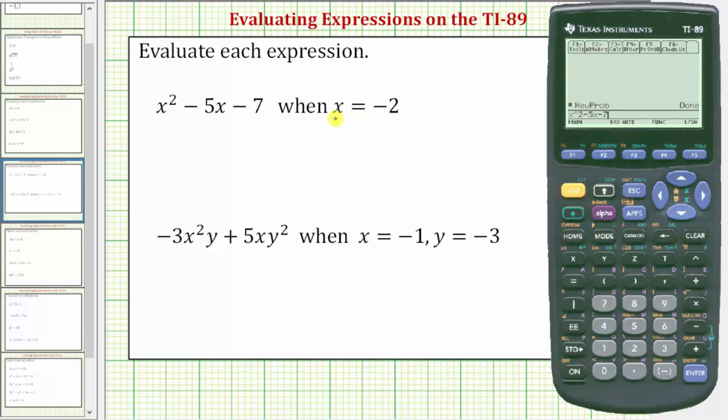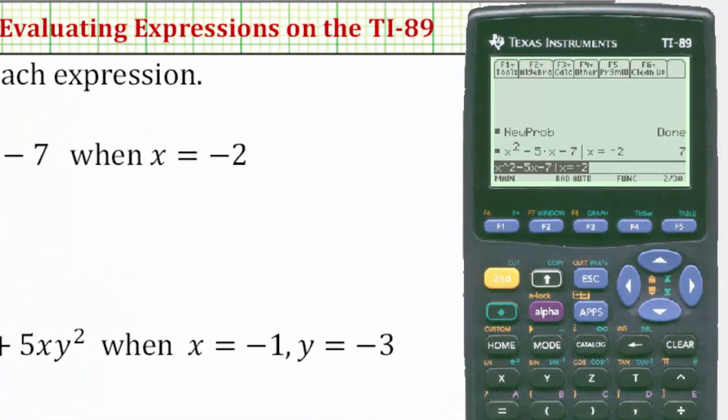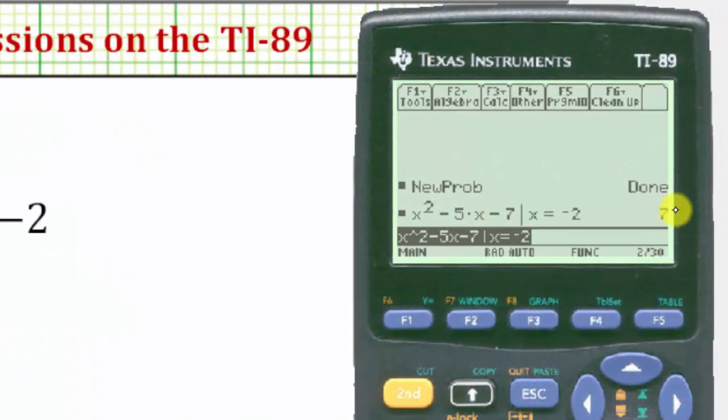Now we want to evaluate this when x = -2, so we press this vertical bar here, and on the right side we enter x = -2. The given expression is equal to positive seven when x = -2.